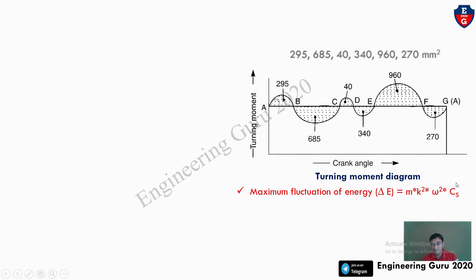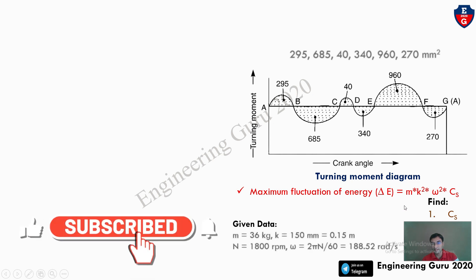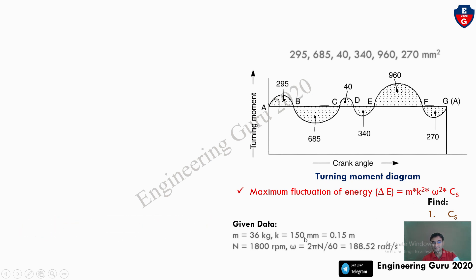Our goal is to find Cs. We have the formula: maximum fluctuation of energy ΔE = m·k²·ω²·Cs. From the given data we have m = 36 kg, k = 150 mm, and ω already calculated. The problem is we don't have ΔE yet, so we must first find ΔE = maximum energy minus minimum energy.